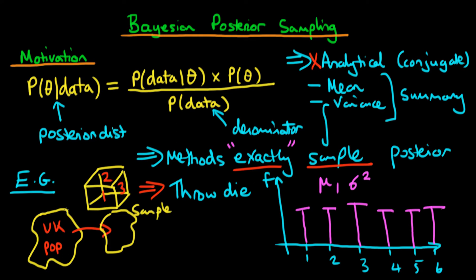If we took that random sample, we might then calculate some measures such as the average height in that sample — the sample mean — and the sample standard deviation, which I'm going to call sigma hat squared. We might like to think that those two quantities, x-bar and sigma hat squared, might in some way be indicative of what the underlying population distribution looks like. And if we were to take a relatively large sample, we could also gain insight into the shape of the distribution.